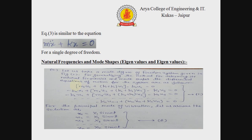Equation three is very similar to the equation for a single degree of freedom system. Now we are going to discuss about the natural frequencies and mode shapes, or we can say eigenvalues and eigenvectors.